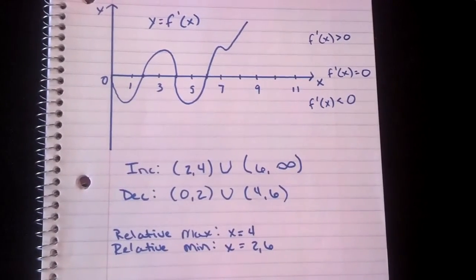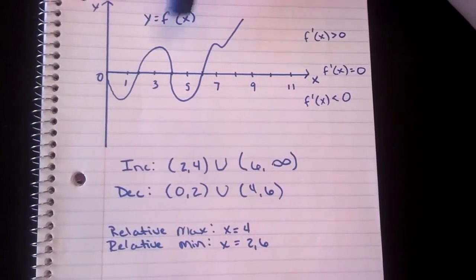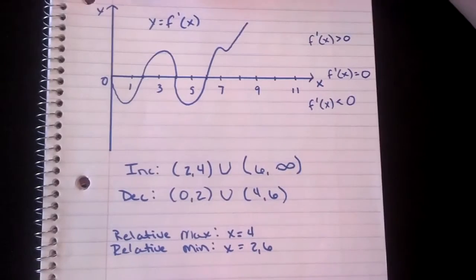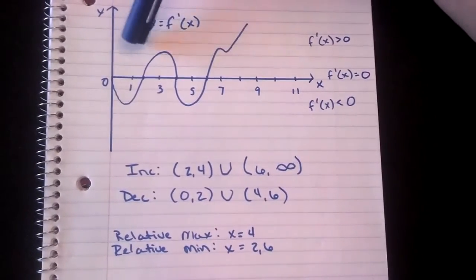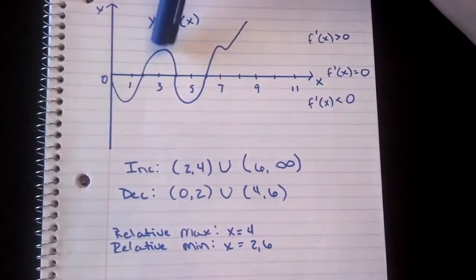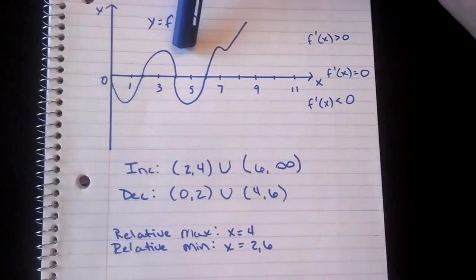Now for the relative min and max, we have to just take a look at where it was increasing and decreasing. For the relative maximum, it's at x equals 4 from the 2 to 4, so x equals 4 is the relative max.